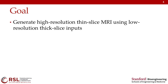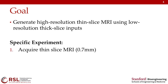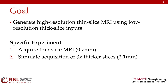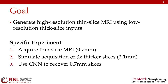So with this as motivation, our goal for this study was to generate high resolution thin-slice MRI by starting off with low resolution thick-slice images as the input to a neural network. The specific experiment we performed was to acquire thin-slice images at roughly 0.7 mm slice thickness, simulate the acquisition of thicker slices — in this case 3x, though we swept through a lot of different downsampling choices — and then use a convolutional neural network to recover the thin-slice images starting from the thick-slice images.